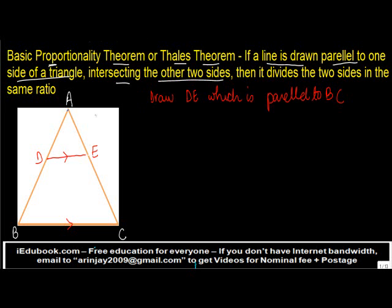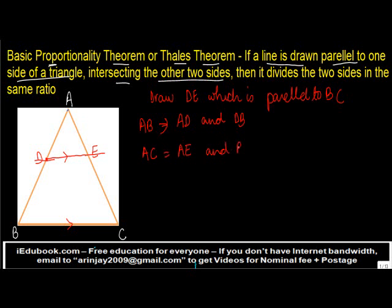Intersecting the other two sides means the line is actually going through the other two sides. On line AB, the line DE passes through point D, intersecting the two sides and dividing AB into two parts: AD and DB. Similarly, looking at AC, the line DE divides it into two parts: AE and EC.